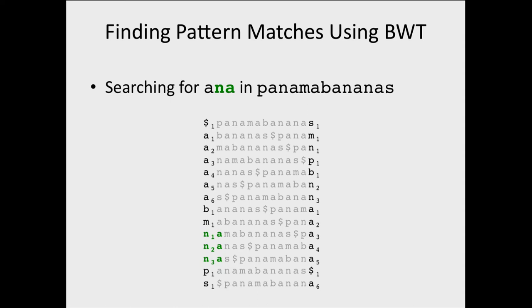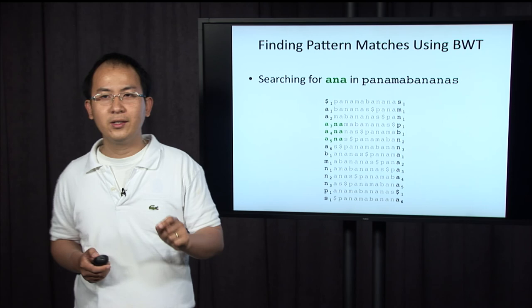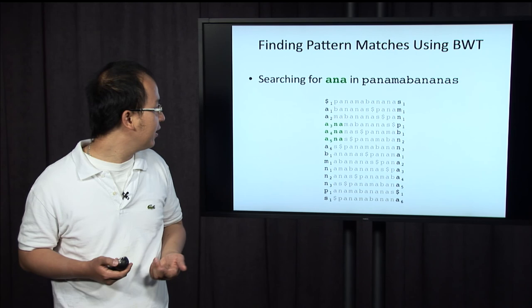So what is next is A. We just go back and find ANA. Using the first-last property, we can again know where A3, A4, A5 appear in the first column. And in this case, ANA appears three times in the string.